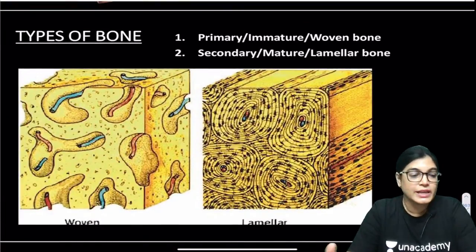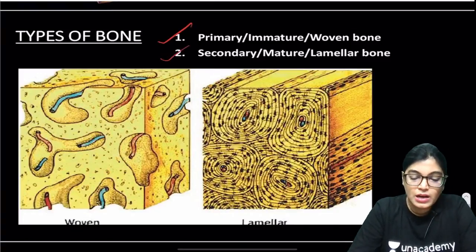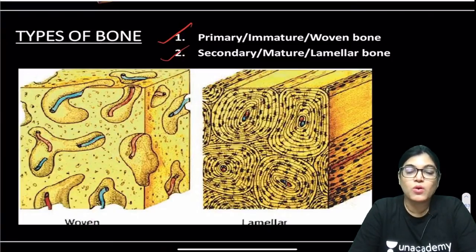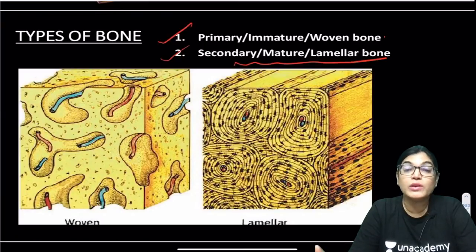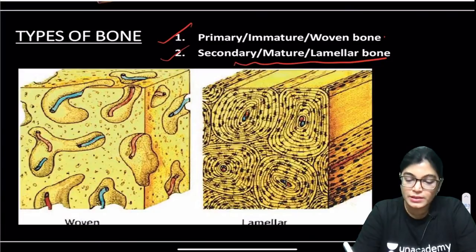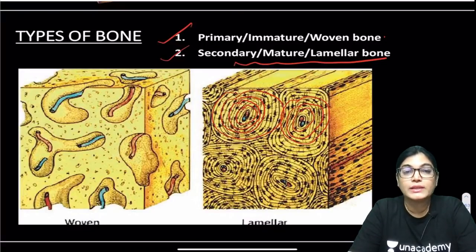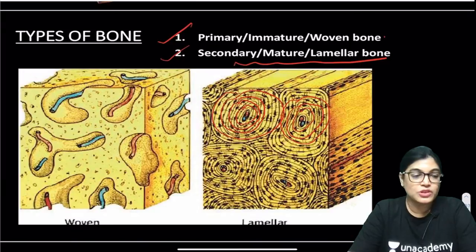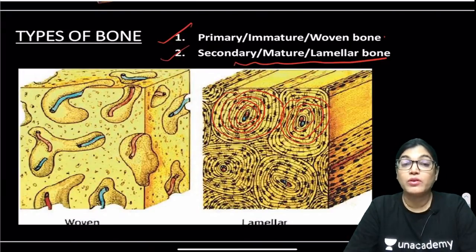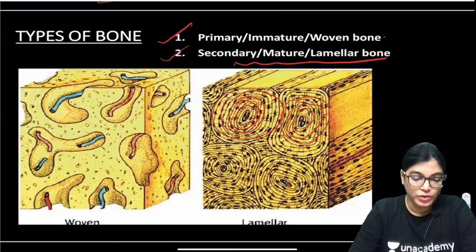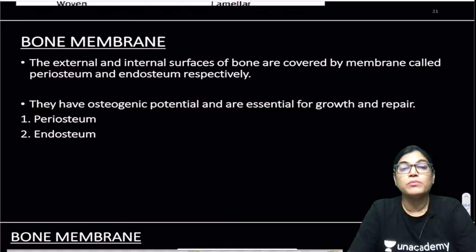Histologically, we divide bone into immature and mature forms. The immature bone, still in the process of formation where osteoid mineralization is ongoing, is called primary immature woven bone. The mature form is lamellar bone, where laminas have been formed — you can see the circular laminar arrangement and the central Haversian canal in histological sections.